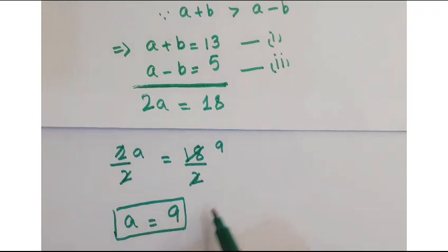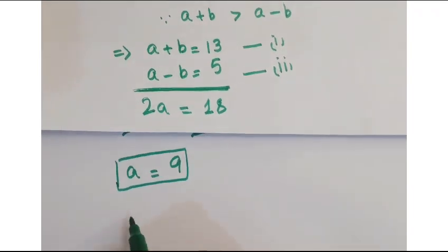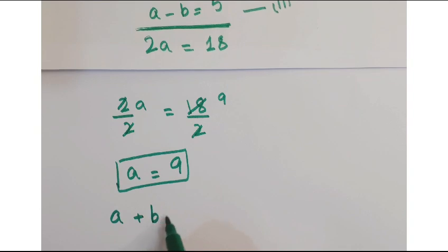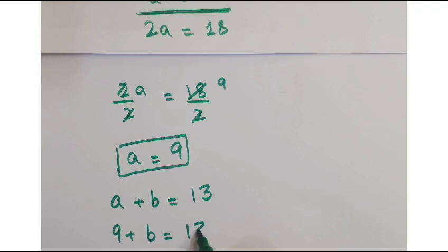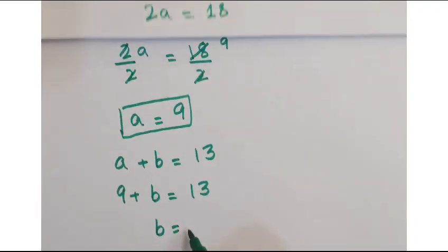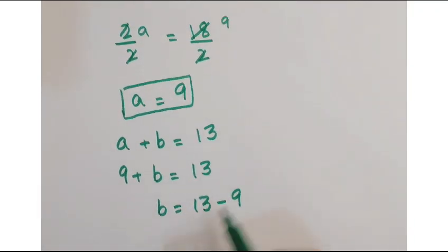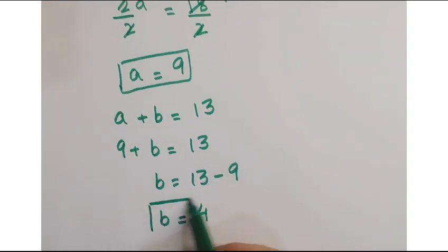Now, putting this value of a in equation number 1 that is a plus b is equal to 13. Put a 9 here. So you get b is equal to 13 minus 9 or you can say b is equal to 4.